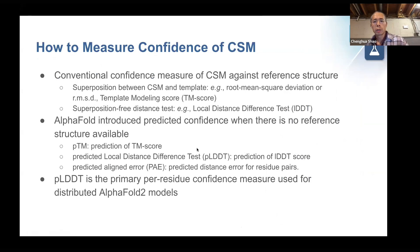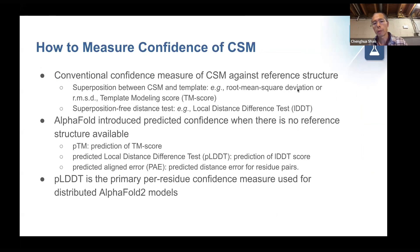To measure the confidence of a CSM, the conventional way needs reference structures. There are two ways to do it, which is what CASP is doing. First, you can superimpose a CSM to the template, then calculate either root mean square deviation (RMSD) or the template model score (TM score). You can also do superimposition-free distance tests, such as the local distance difference test, LDDT, which I will talk about in the next slide.